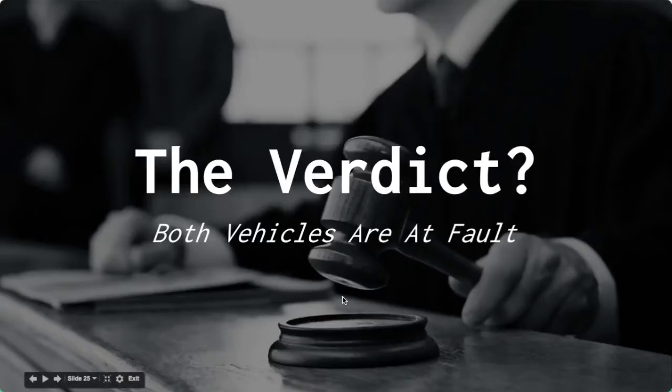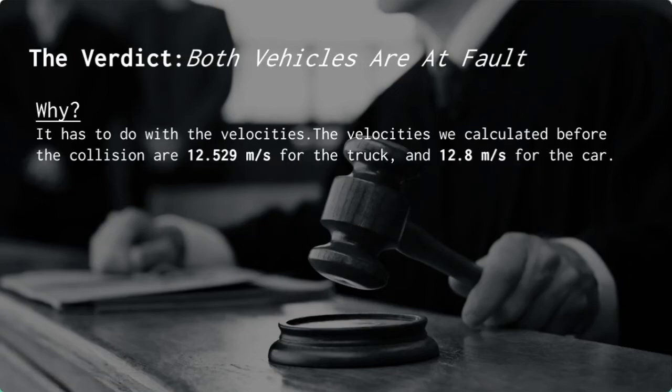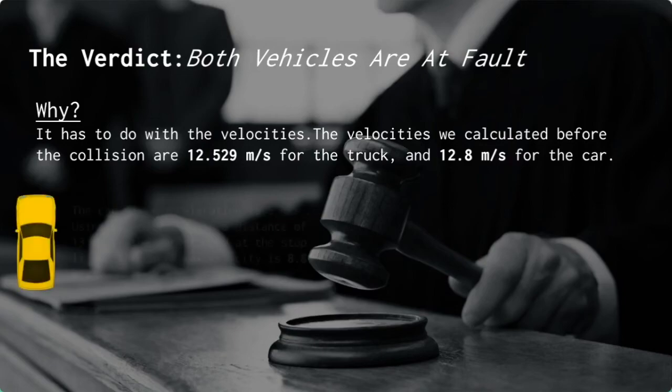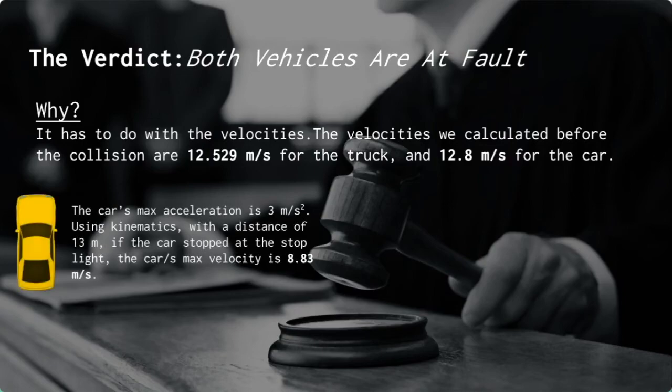We have come to the verdict and decided that both vehicles are at fault. Why you may ask? It has to do with the velocities. The velocities we calculated before the collision are 12.529 meters per second for the truck, and 12.8 meters per second for the car. The car's maximum acceleration is 3 meters per second squared. Using kinematics with a distance of 13 meters, if the car stopped at the stoplight, the car's maximum velocity is 8.83 meters per second.